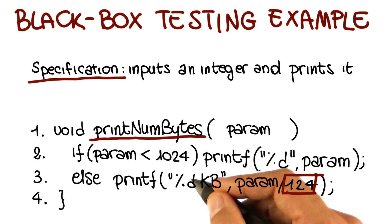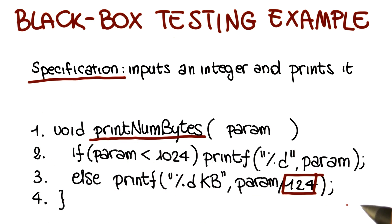However, if we were to look at the code, so operating in a white box manner, we will right away see that we need to have a test case that checks the program when the parameter is greater than 1024, and we will find the problem right away.